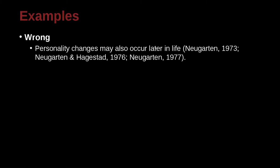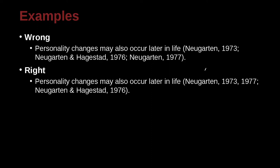Personality changes may occur later in life (Neugarten, 1973; Neugarten & Hasgard, 1976; Neugarten, 1977). In this case, we have the same author but different years. We also have one author paired with a different author. We take Neugarten, since he's the same person, and combine the dates by splitting them with a comma. The smallest date goes first — 1973 before 1977.